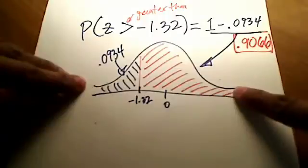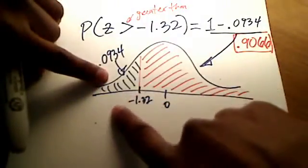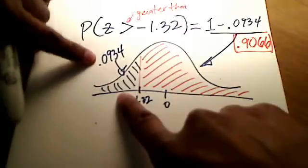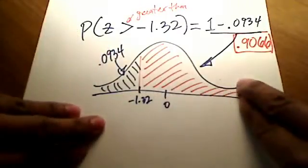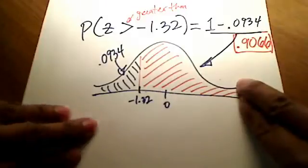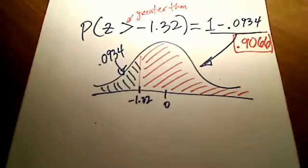Think about that picture-wise for a second. If all of this area is 1 and just this little much over here on the left-hand side of negative 1.32 is 0.0934, then the majority of the area under the curve sitting on the right side, which is all this red stuff that I highlighted, is 0.9066. That's roughly 90% or 91% of the total data.